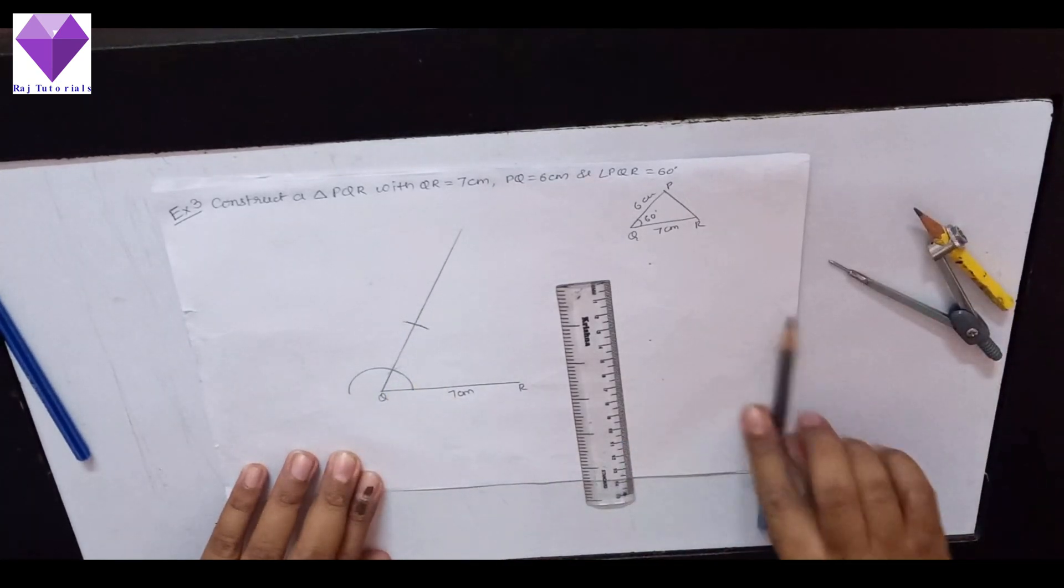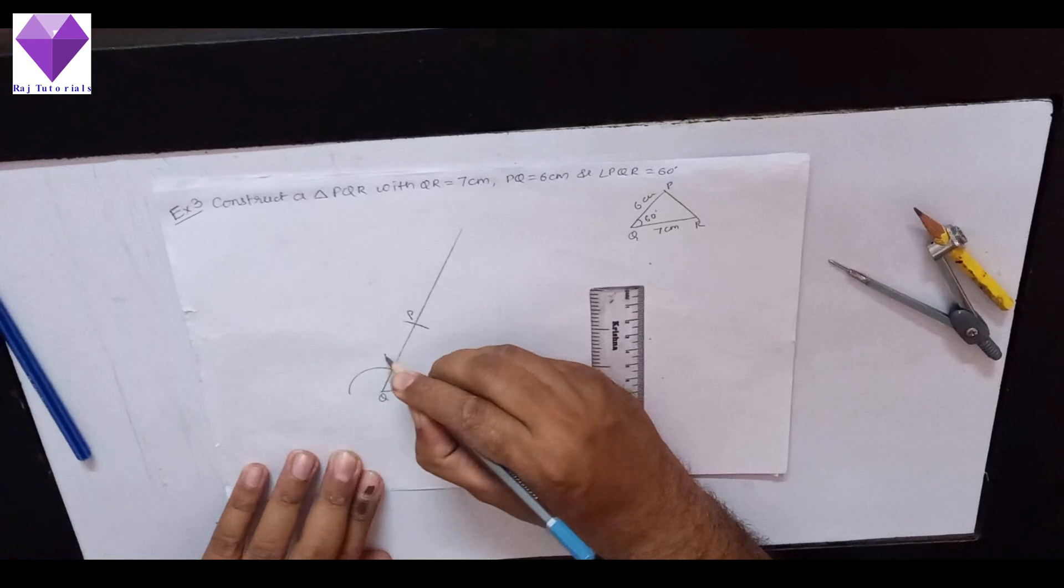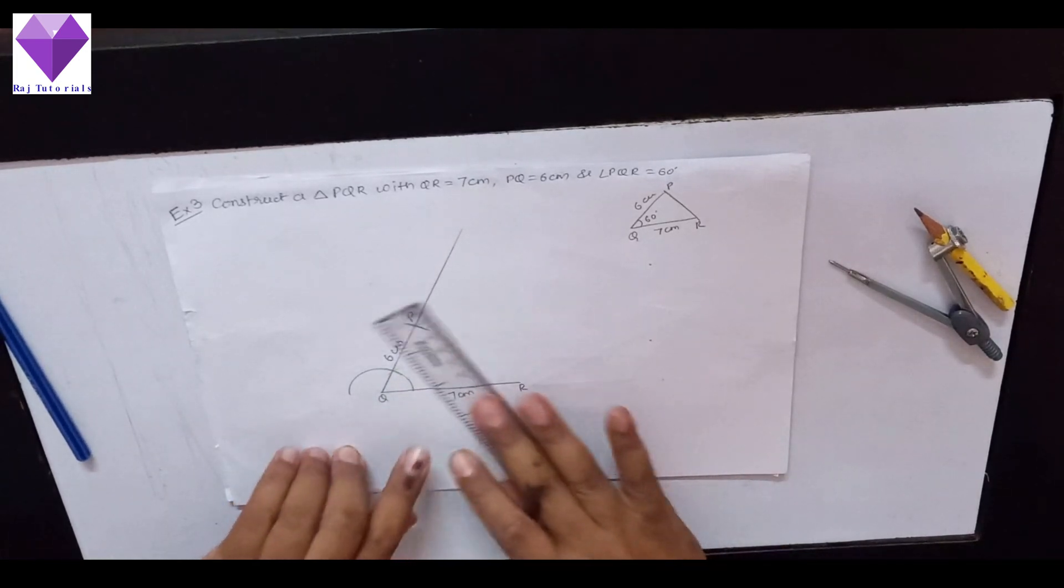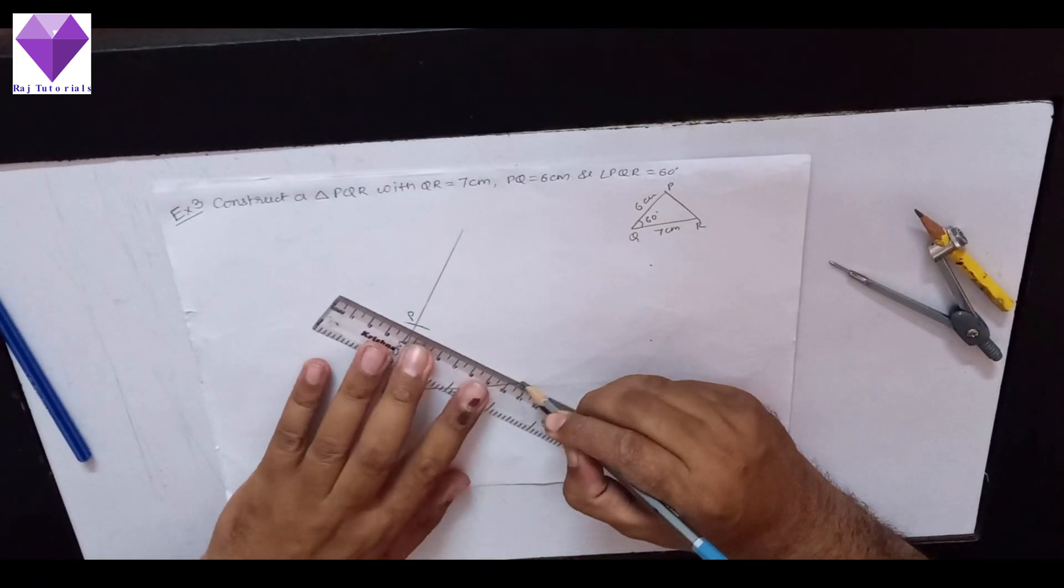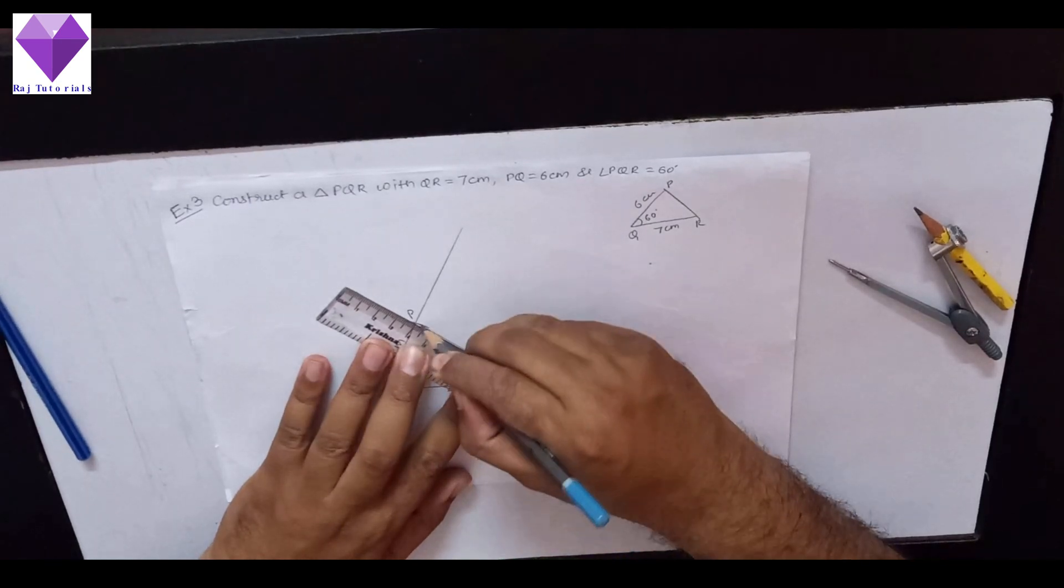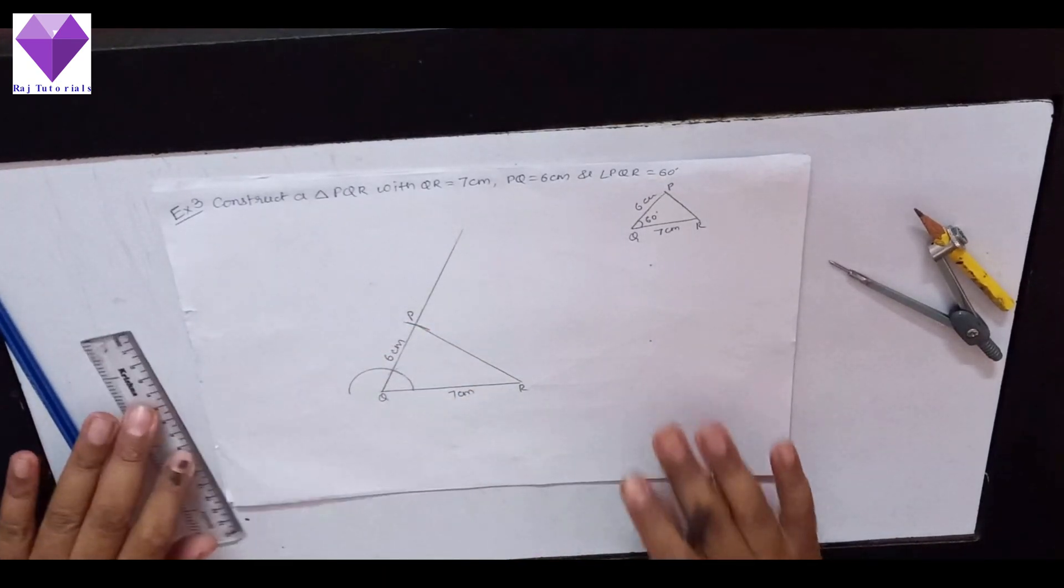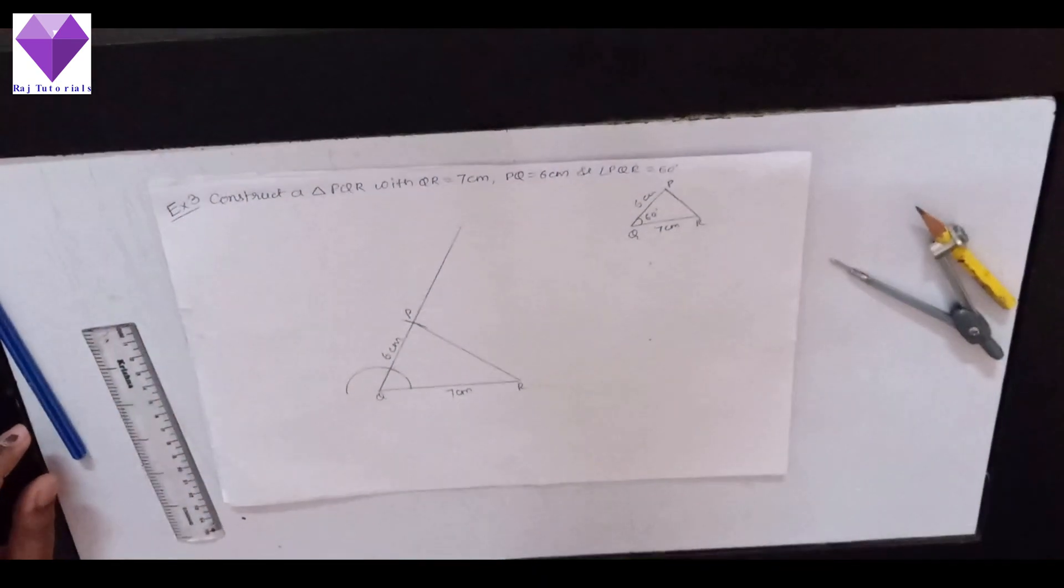So I have got P point. This is 6 cm. Now, we have to join P and R. So, the required triangle is constructed. Thank you.